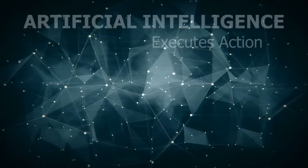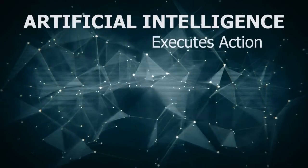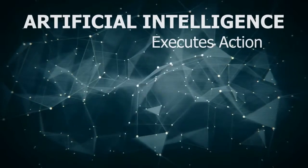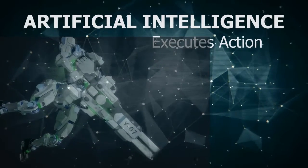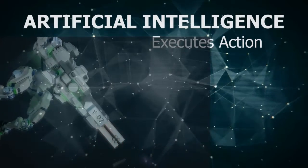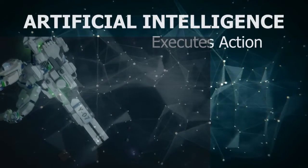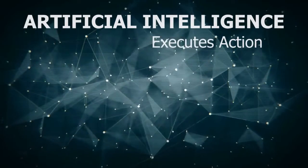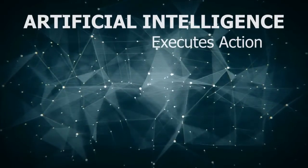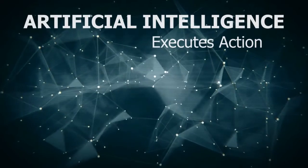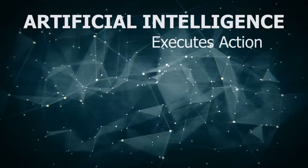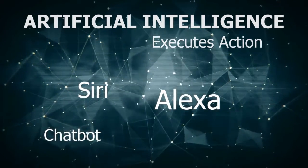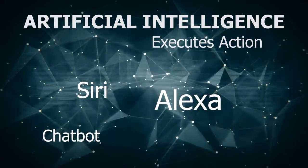Moving on, next is Artificial Intelligence. I think this is by far the most well-known term, ever since our childhood through Hollywood movies. We have seen AI in movies like Terminator, iRobot, Matrix, and others. To make it simple, Artificial Intelligence is an autonomous agent that executes actions — remember the key term here: executing the action. It is just like Siri performing as per our voice command, or Alexa playing the song we requested, or a chatbot answering our query.